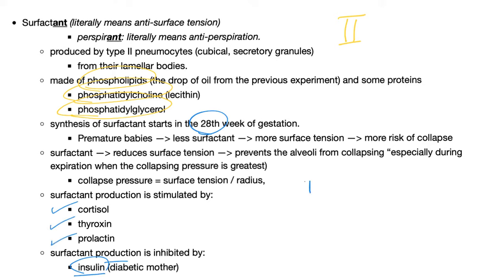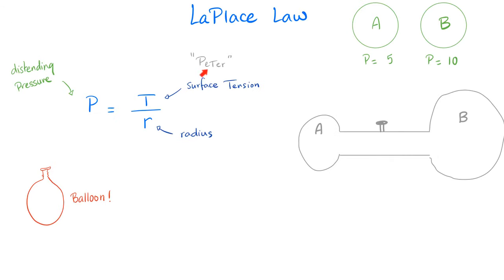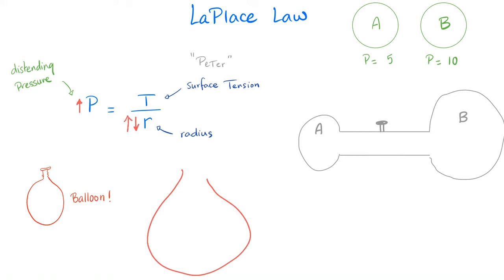Laplace's law: collapsing pressure P = T/R (pressure equals surface tension over radius). When you start to inflate a balloon, it's very hard because the radius is so small — the distending pressure is huge. As the balloon gets bigger, the radius increases and the distending pressure decreases, so it gets easier. P = T/R.